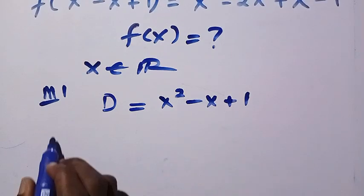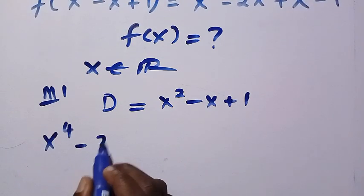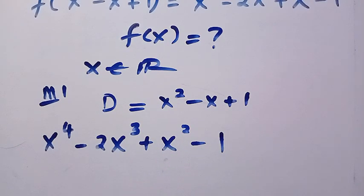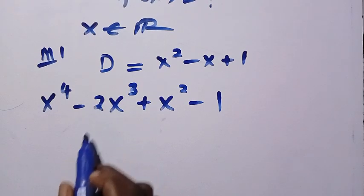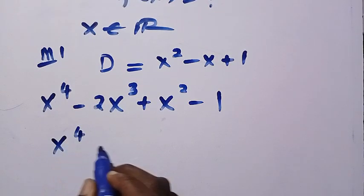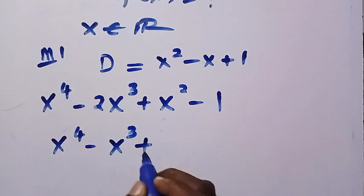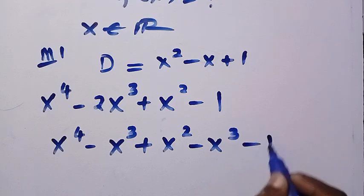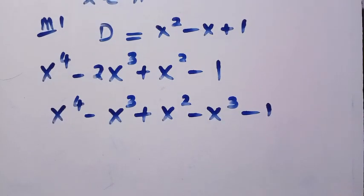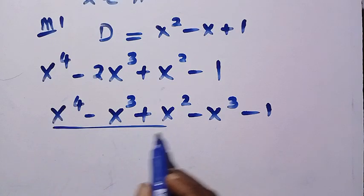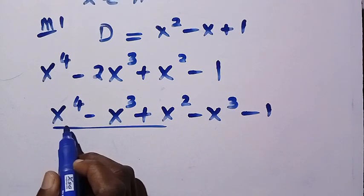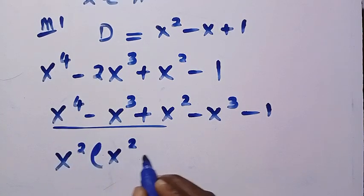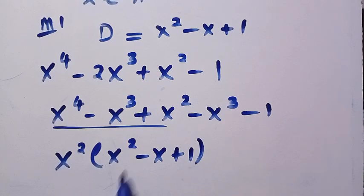From the right-hand side, we have x to the power of 4 minus 2x to the power of 3 plus x squared minus 1. I'll break this down into: x raised to the power of 4 minus x raised to the power of 3 plus x raised to the power of 2, then minus x raised to the power of 3, minus 1. Here, x squared is common in the first group, so taking out x squared gives x squared minus x plus 1.